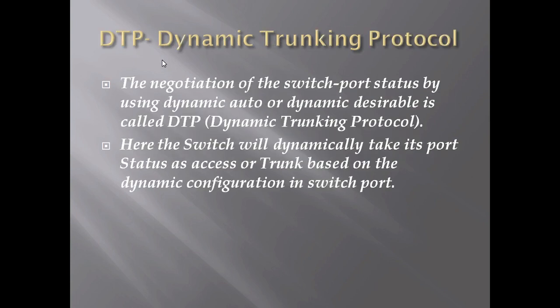Next, we move on to Dynamic Trunking Protocol, DTP. We saw that access and trunk ports can be configured manually, but DTP allows switches to take the port mode dynamically. There are two modes: dynamic auto and dynamic desirable, which can be configured. The switch will dynamically determine its port status as access or trunk based on the dynamic configuration of the switchport on both ends, regardless of what is manually configured.